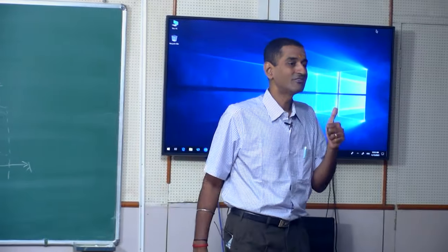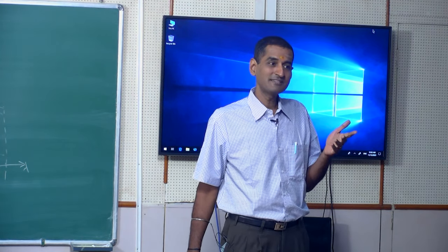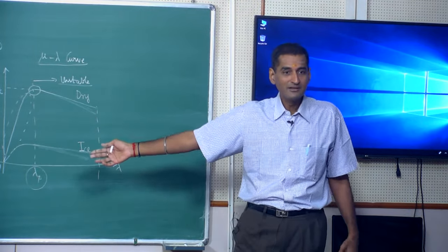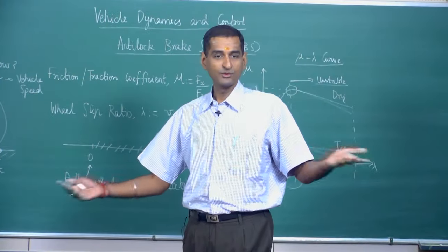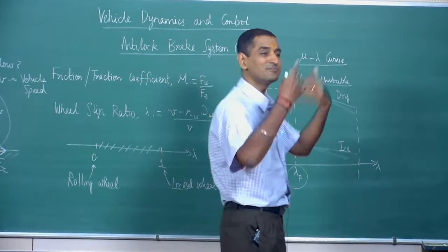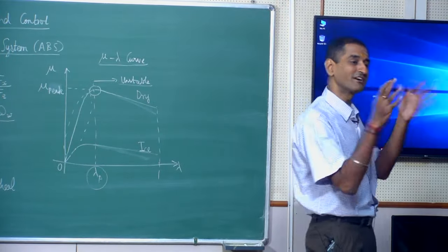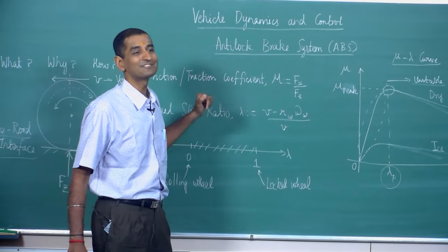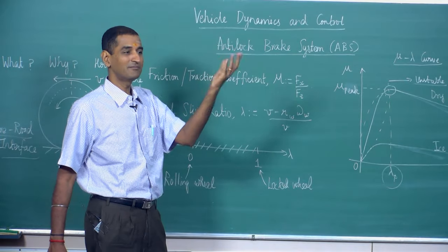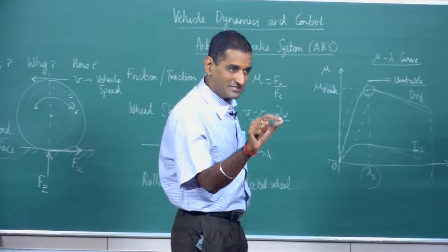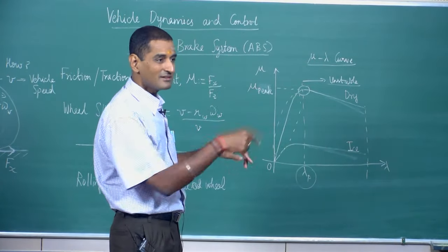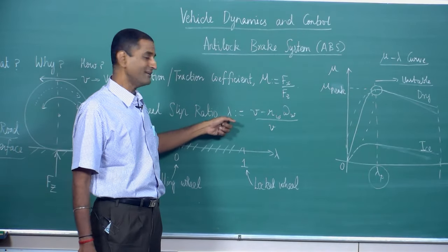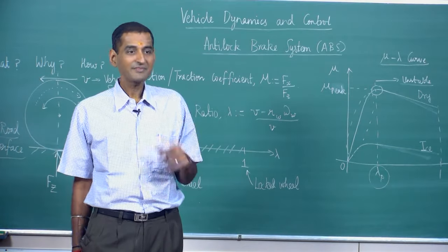Analogous to setting a room temperature of 24 degrees Celsius, someone must tell me the lambda reference value. On a dry surface it may be 0.2, on an icy surface maybe 0.05, because the mu-lambda curve differs for different road surfaces. How does the vehicle figure this out automatically while running, especially if the surface transitions from dry to wet mid-drive? Additionally, just as a temperature sensor provides feedback in a room AC system, someone must give me what the actual lambda is at each instant so I can control it.